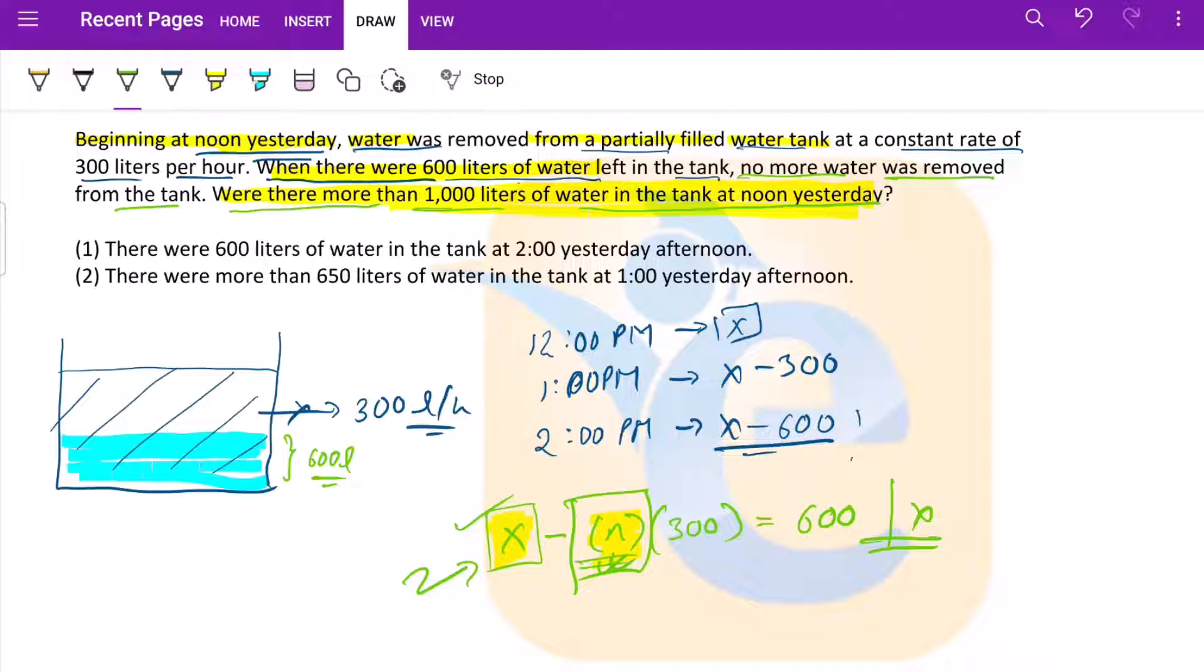Let's jump into statement one. There were 600 liters of water in the tank at 2 yesterday afternoon. Now what is a mistake that you can do here? You can infer this as you would read 600 liters, so you would infer that n is equal to 2, and that is where you will lose this question.